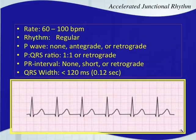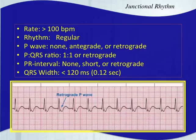Next, we have junctional tachycardia — very uncommon. The rate is greater than 100, just like sinus tachycardia. Whenever tachycardia appears at the end of the rhythm name, it should be a rate greater than 100.